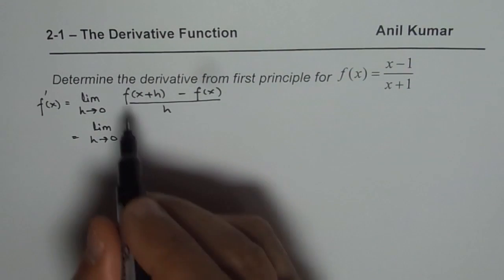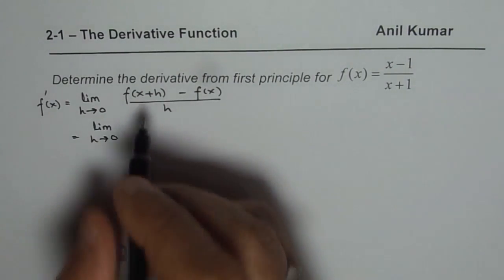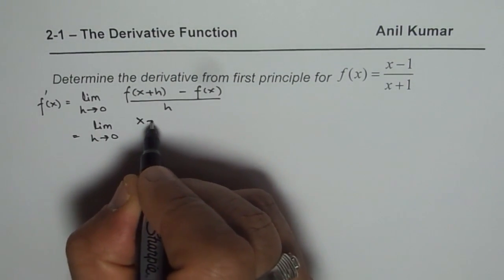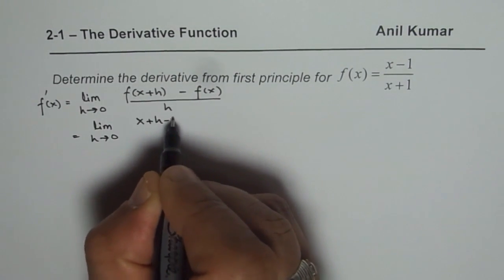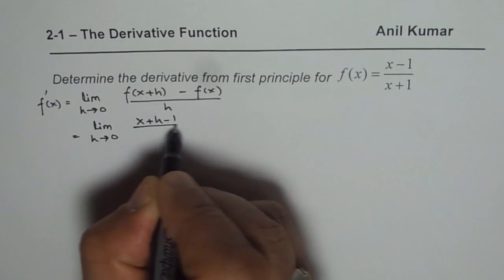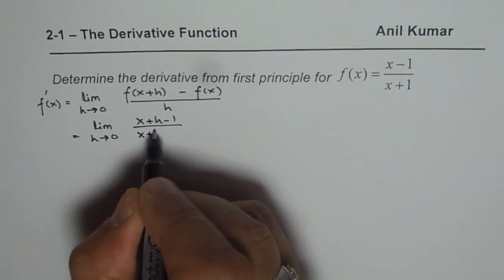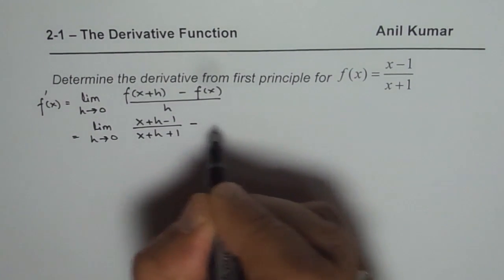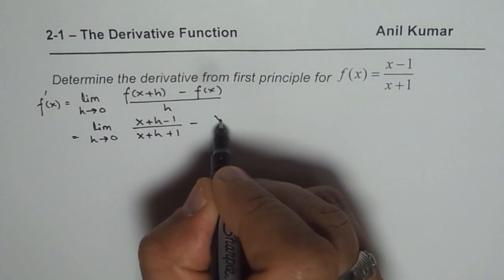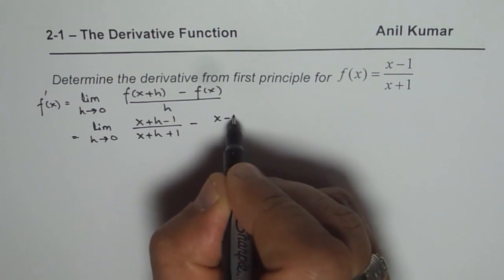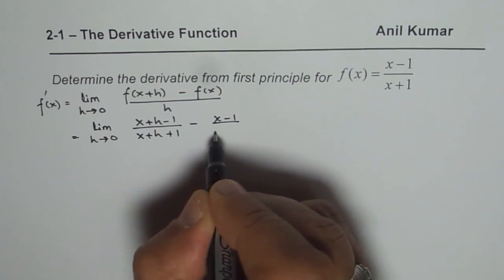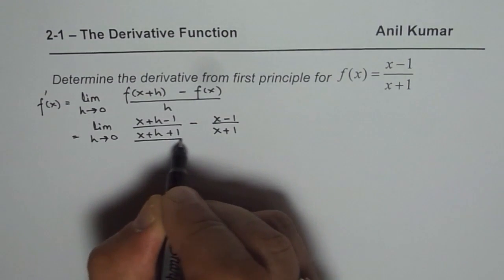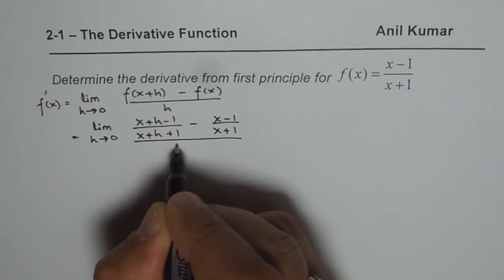Since x is replaced by x plus h, what we get is: x plus h minus 1, divided by x plus h plus 1, minus the original function x minus 1 over x plus 1, all divided by h.